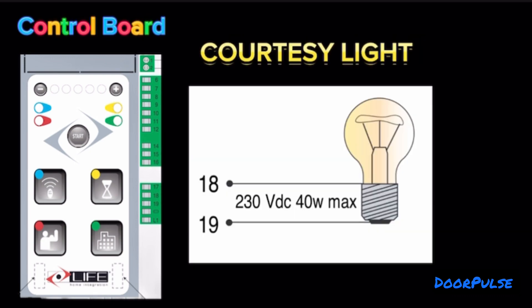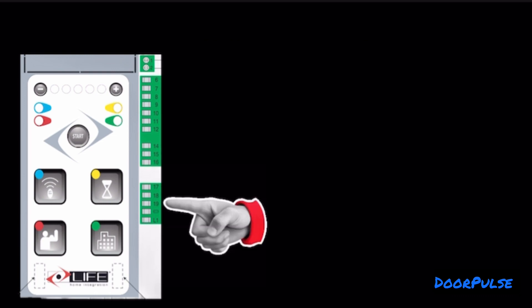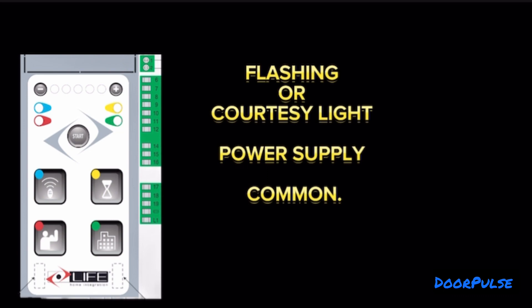Terminals 19 and 18: Courtesy Light. Up to 230V AC 40 Watt Max output for connecting a courtesy light that switches on at the start of each movement, opening or closure, and is characterized by a fixed delay of 30 seconds. Terminal 19 is flashing or courtesy light power supply common.